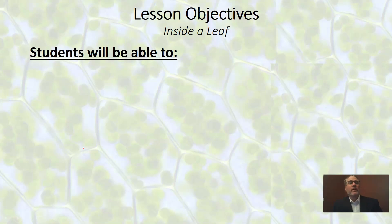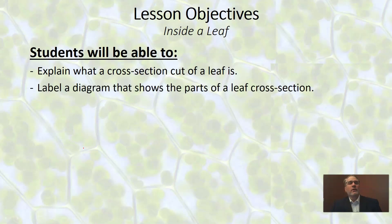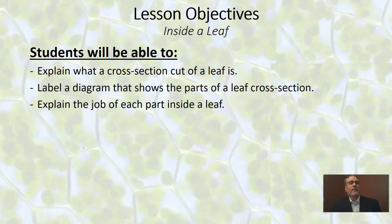Let's take a look at our objectives today. Our objectives will be to explain what a cross-section cut of a leaf is. We're going to have to cut the leaf open, and I need you to understand what a cross-section cut is. The second thing you'll need to do is look at an unlabeled diagram showing the parts of the leaf and be able to label it, understanding what those structures inside a leaf are.